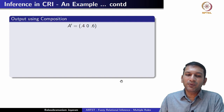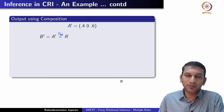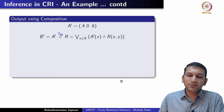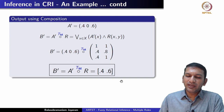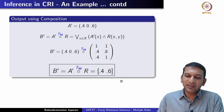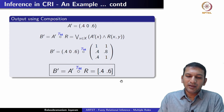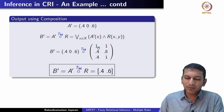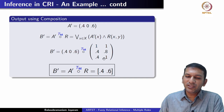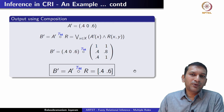The next step: given A′, we compose with the relation to obtain an output. Since it is CRI, we use sup-T composition — in this case the minimum T-norm. The formula gives us the output. In this composition we are taking the max of mins. Looking at the row composed with each column: for the first column, minimum values are 0.4, 0, 0.4, so max is 0.4. For the second column, we have 0.4, 0, 0.6, max is 0.6. So the output B′ = [0.4, 0.6].